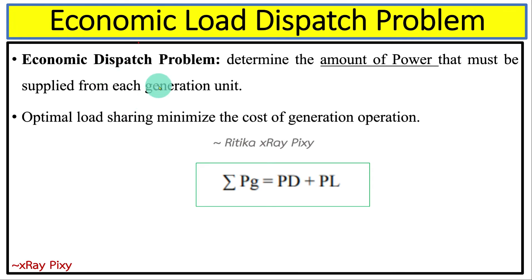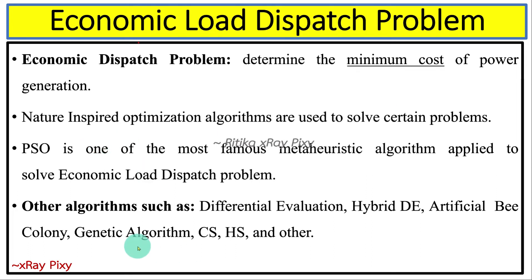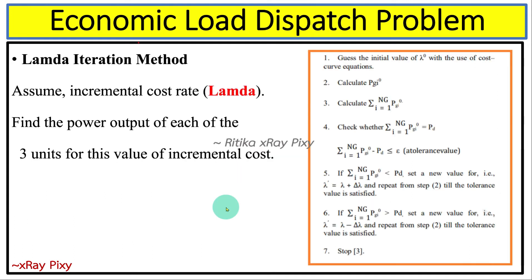In the economic load dispatch problem, we determine the amount of power that must be supplied from each generation unit to achieve minimum generation cost. We can use meta-heuristic algorithms inspired by nature, such as particle swarm optimization, cuckoo search, harmonic search, differential evolution, artificial bee colony, and genetic algorithm. In another video we will discuss those methods, but in this video we will solve the problem using the lambda tracing method.